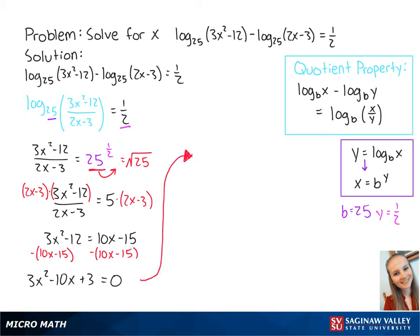The left side can factor out to become 3x minus 1 times x minus 3 equals 0. Now we have the equations 3x minus 1 equals 0 or x minus 3 equals 0.